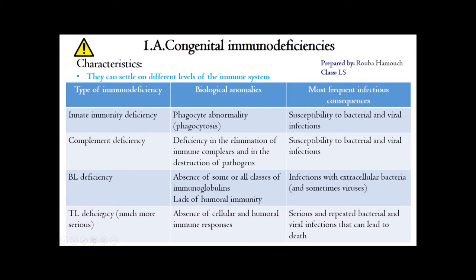In the case of T-lymphocyte deficiency, the situation is much more serious, since we have deficiency in both T-helper and cytotoxic T-lymphocytes. This causes absence of both cellular and humoral immune responses, because T-helper cells activate not only the cellular immune response but also the humoral immune response triggered by B-lymphocytes. This results in serious and repeated bacterial and viral infections that can lead to death, since both cellular and humoral immunities are disrupted. This table summarizes the types and consequences of immunodeficiencies.